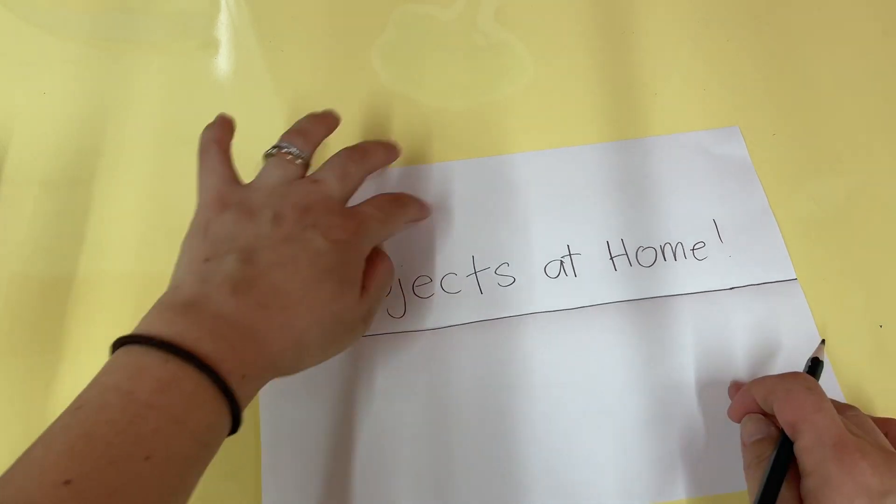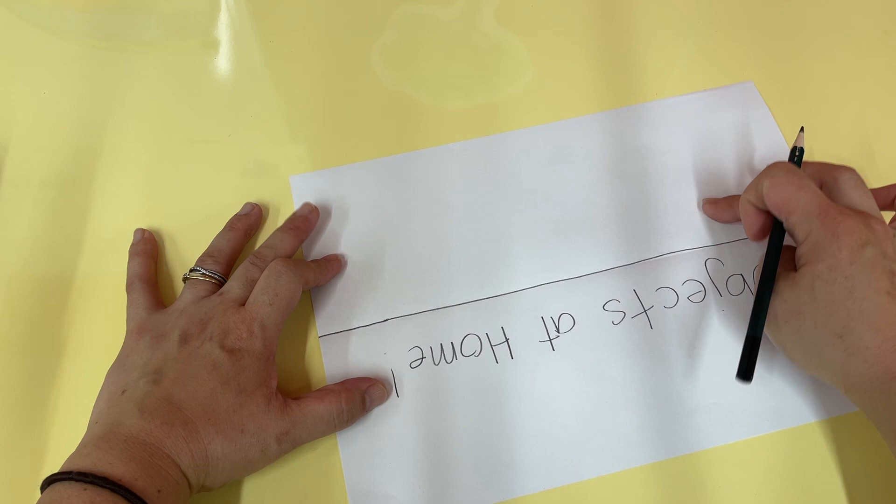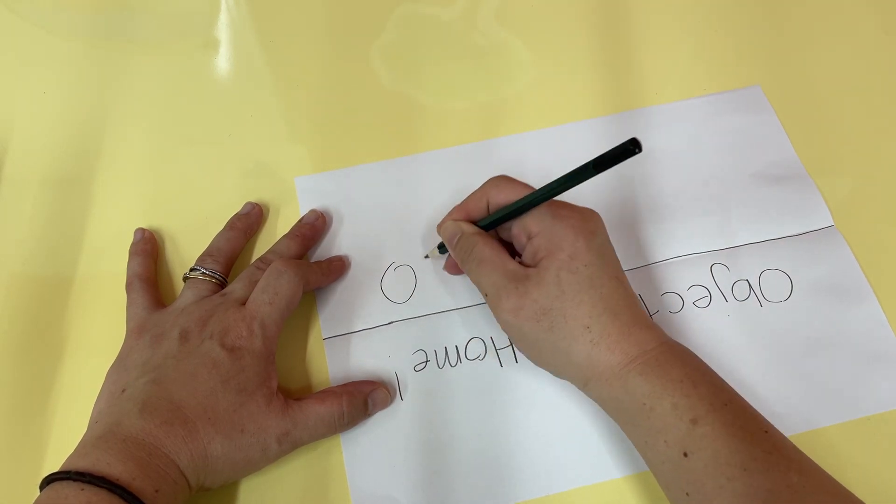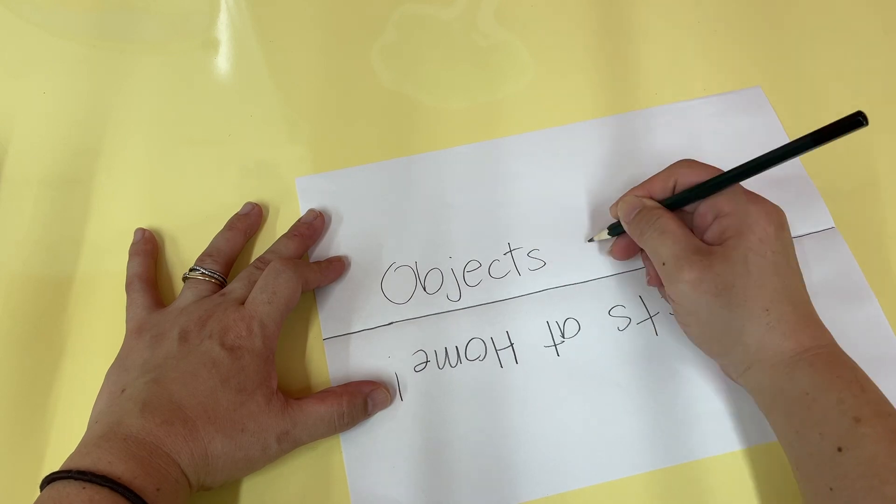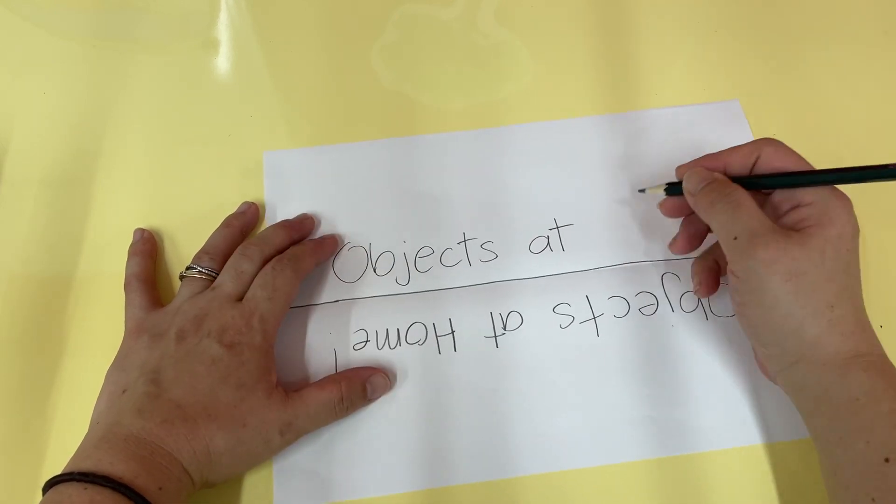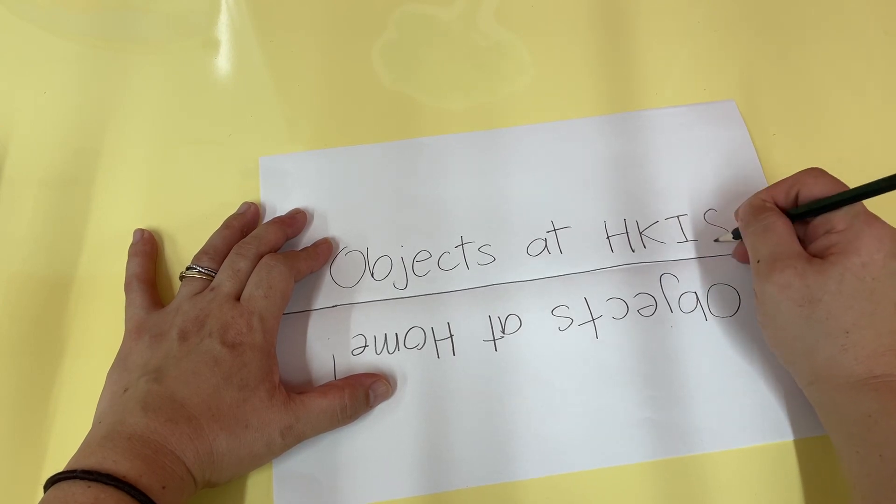Okay, and then flip, flip, flip, flip, flip. Here you write objects at H-K-I-S. Objects at H-K-I-S. Tada!